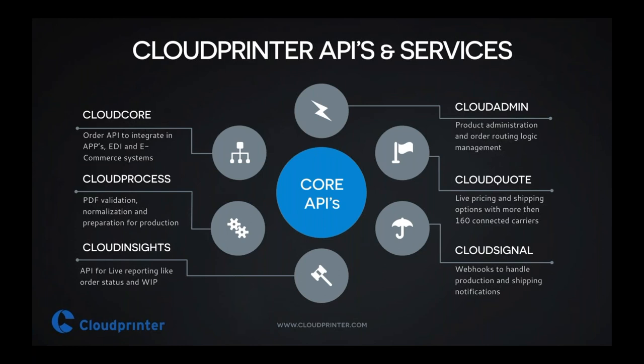So Moens, just if you allow me to ask — basically, I integrate Cloud Core into my ordering system or corporate application to push orders to Cloud Printer. Then with Cloud Processing, you process them in terms of validation and normalization. With Cloud Admin, I can set up order routing rules for specific markets or specific printers. And with Cloud Quote, I can show all the shipping prices available for the destination address in my shopping cart. Is that correct?